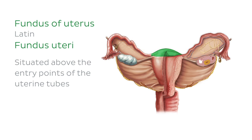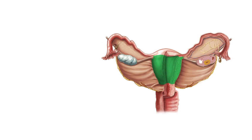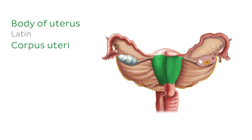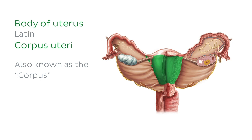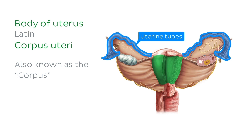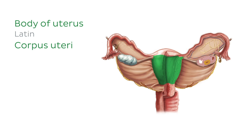Moving inferiorly, we have the body of the uterus, which is also known as the corpus. As we can see in our illustration, the cavity of the body is shaped like an inverted triangle due to its connection to the isthmus and both uterine tubes. Implantation of the blastocyst normally occurs here.